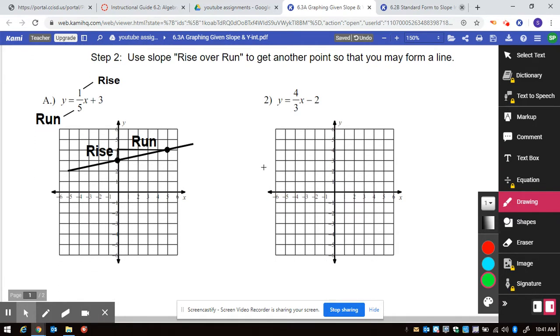So if you think about this y equals mx plus b, b means begin on the y-axis. So I begin on the y-axis at three and my rise is one, my run is five. So I go up one over one, two, three, four, five and then I plot the next point.